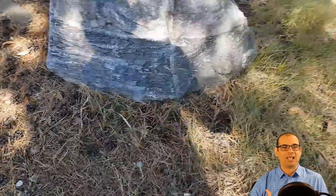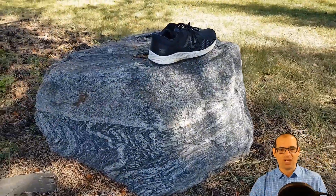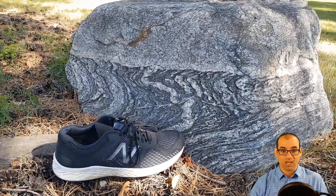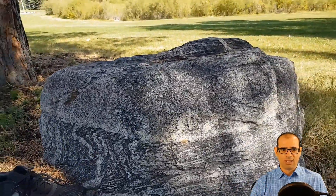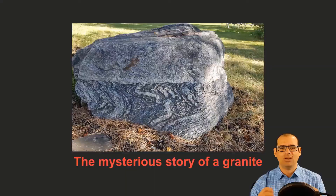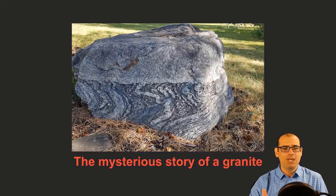We have to understand that in order to get a metamorphic rock like this one with this grade of deformation, we need very high pressure and also very high temperature. In contrast, in order to have a granite, we need a magma to get cold very slowly. The point is how we can mix these two different geological conditions to have a rock like this one. Maybe you can have an explanation — please leave your thoughts and opinion in the comment section. In this video I will try to explain all the geological processes of this rock. Let's start.